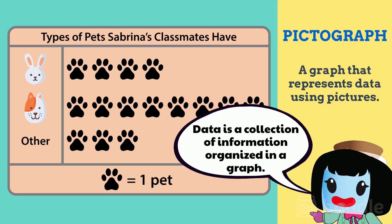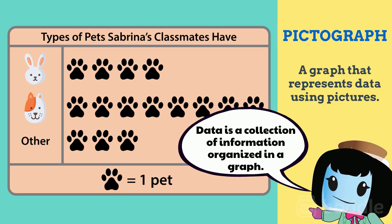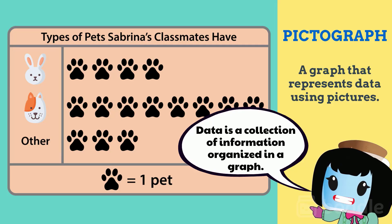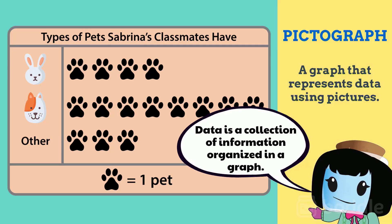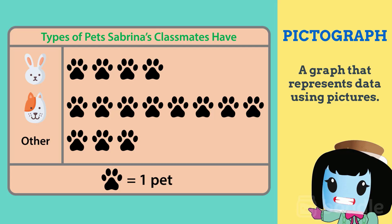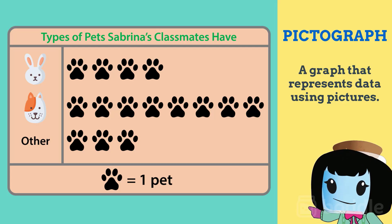Data is a collection of information that is usually organized in a graph. This graph represents the type of pets Sabrina's classmates have.